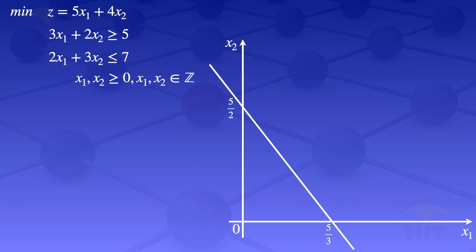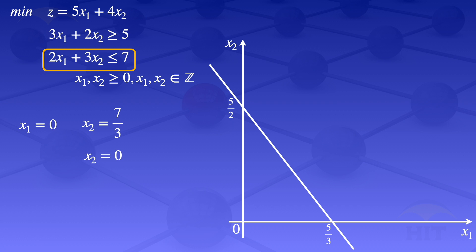I move on to the next constraint: 2x1 plus 3x2 less than or equals to 7. When x1 equals 0, x2 equals 7 over 3. When x2 equals 0, x1 equals 7 over 2. I plot these points on the graph — the point (0, 7/3) and the point (7/2, 0) — then join those two points using a straight line.